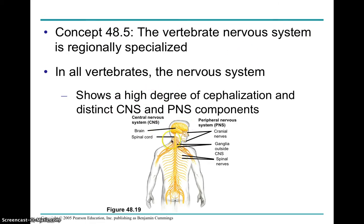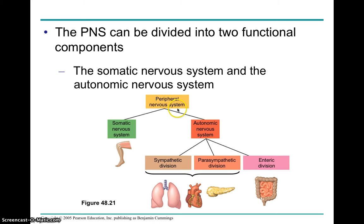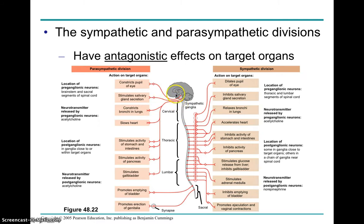Moving on to divisions of the nervous system. We have the central nervous system — brain and spinal cord. Then you have the peripheral nervous system, which allows communication between the CNS and the outside environment. The PNS is divided into subcategories. The somatic nervous system involves skeletal muscles and is voluntary. The autonomic nervous system is automatic — it happens on its own. It's subdivided into the sympathetic division, which is excitatory, and the parasympathetic division, which is inhibitory, along with the enteric division for the GI tract. The peripheral nerves emanate out from the spinal cord.